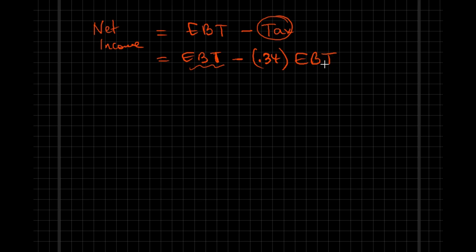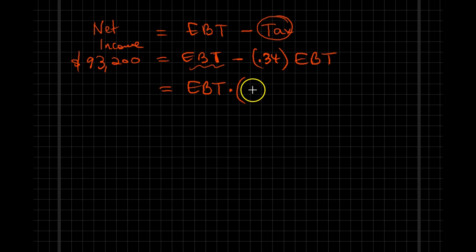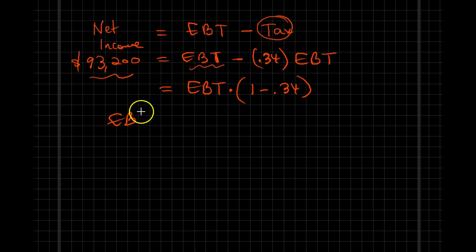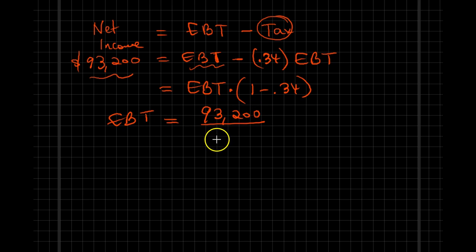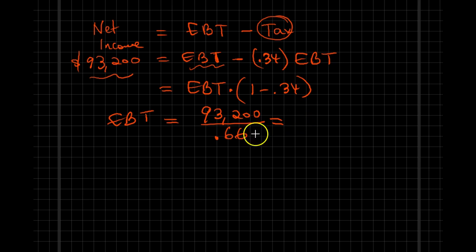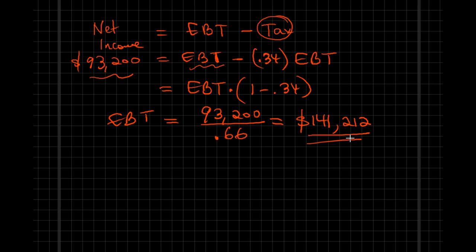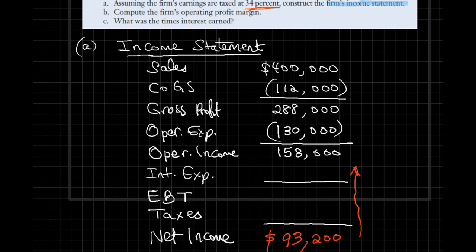Since I already calculated net income to be $93,200, rearranging gives us: EBT × (1 − 0.34) = 93,200, so EBT × 0.66 = 93,200. Therefore, earnings before taxes equals 93,200 divided by 0.66, which gives us earnings before taxes of approximately $141,212.